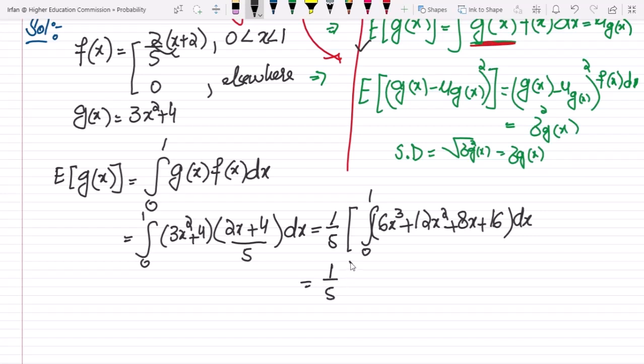Addition and integration are linear processes, so taking the integral of all of them, we will get 6 times x to the 4 divided by 4 from 0 to 1, plus 12 times x cube divided by 3 from 0 to 1, plus 8 times x square divided by 2 from 0 to 1.